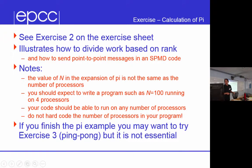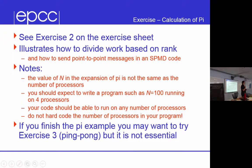Exercise 2 on the sheet looks quite simple but it's surprisingly hard to get correct. It illustrates how to send point-to-point messages in SPMD. We have an expansion for pi which is a large sum from 1 to 840. If there are four of us, I can do the sum from 1 to 210, you could do 211 to 420, somebody else could do the next section, and somebody else could do the last section. Each person computes a fraction of the sum.